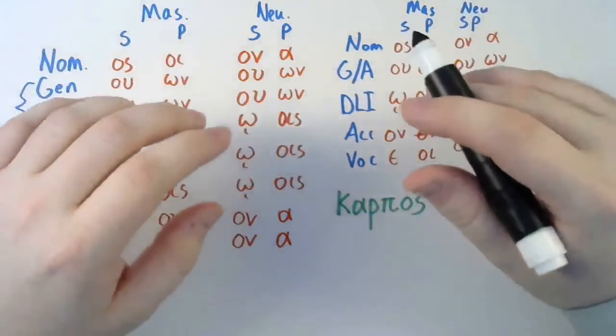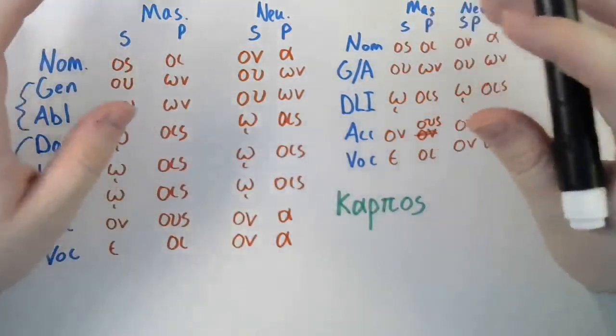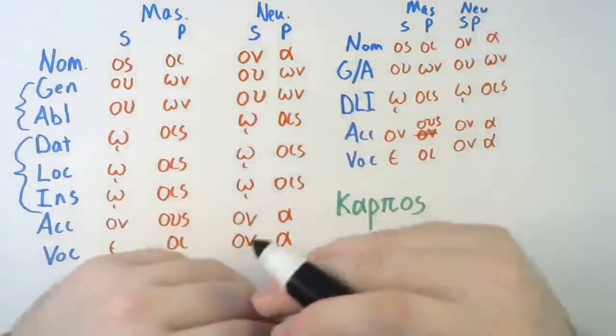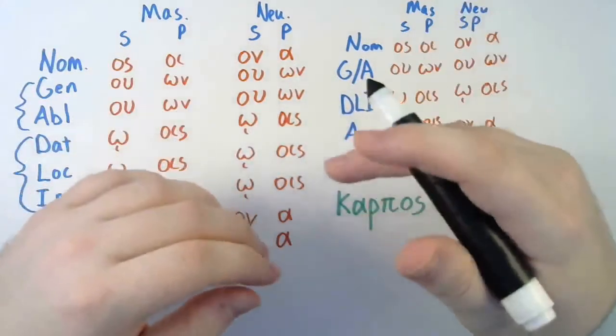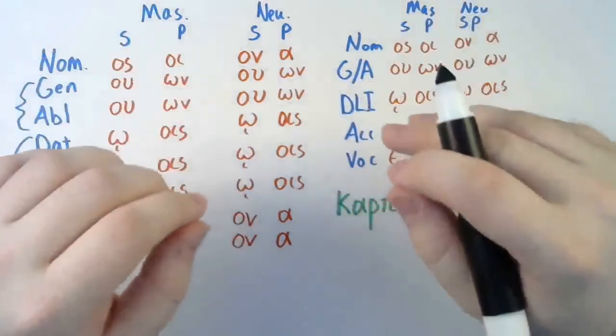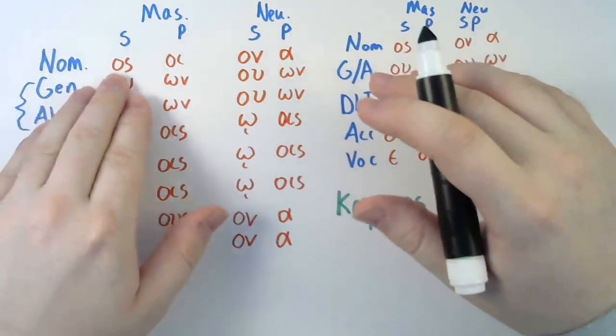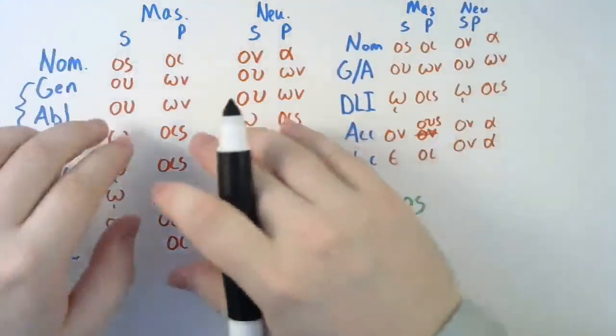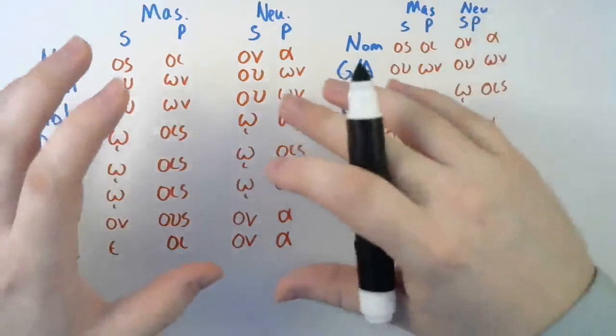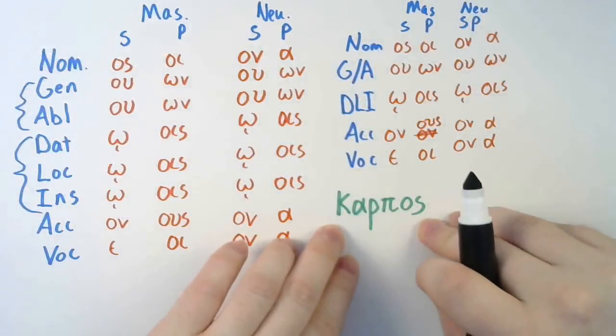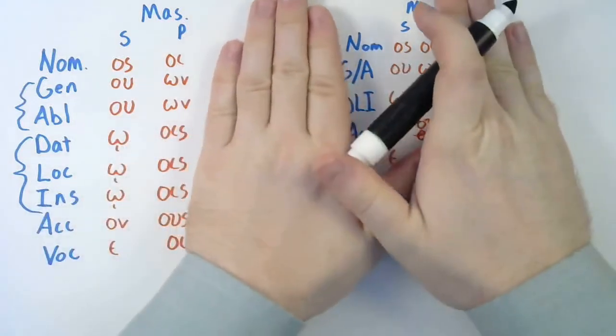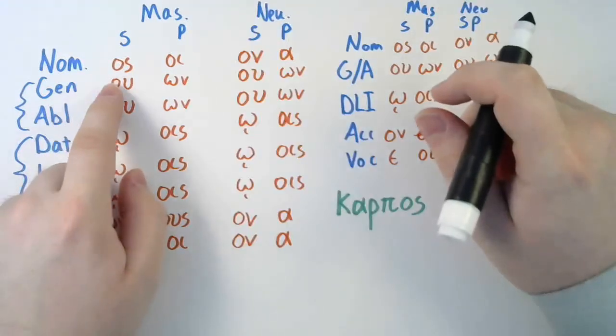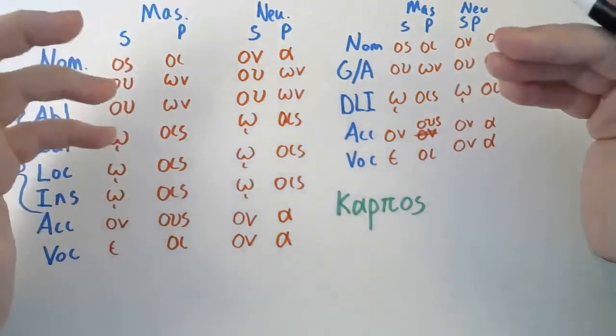Now, recall, verbs had what we called a lexical form and a stem. Lexical form for verbs was the present active indicative first person singular, like lego. And lego is the lexical form of, well, lego. So, the lexical form of a noun is the nominative singular. Now, you're saying, well, masculine or neuter. Well, a word is generally only one gender. Karpos here is a masculine. So, for the karpos, you ignore that half of the chart. You only look at the masculines. So, the nominative singular is the lexical form of the word.